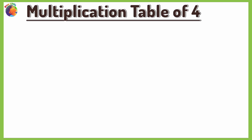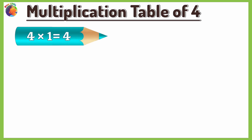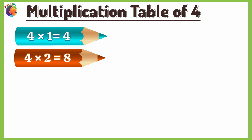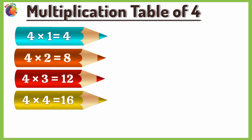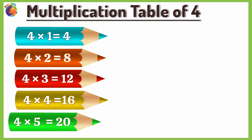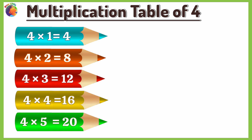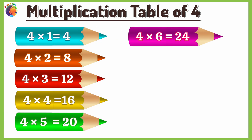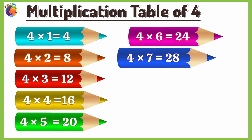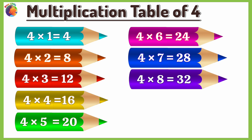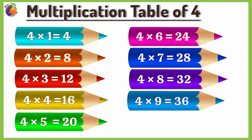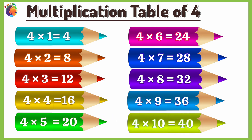Multiplication Table of 4. 4 times 1 is 4, 4 times 2 is 8, 4 times 3 is 12, 4 times 4 is 16, 4 times 5 is 20, 4 times 6 is 24, 4 times 7 is 28, 4 times 8 is 32, 4 times 9 is 36, 4 times 10 is 40.